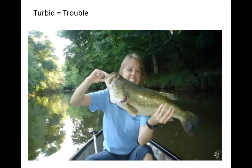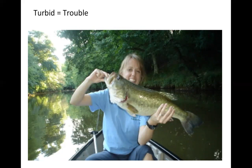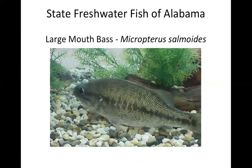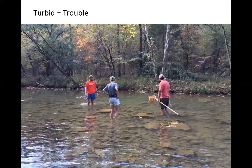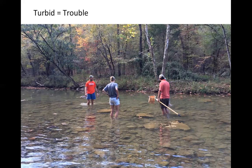Turbidity also equals trouble for sight predators like bass. If you've got highly turbid waters, bass aren't able to effectively hunt and get their next meal. Our state freshwater fish is largemouth bass — just thought I'd throw that in there. Turbidity is also trouble in that when the sediment suspended in the water column falls out and settles, it smothers the bed of streams, rivers, and lakes, reducing the area available for fish and other organisms for breeding habitat and to hide from predators. It really just is smothering a system.